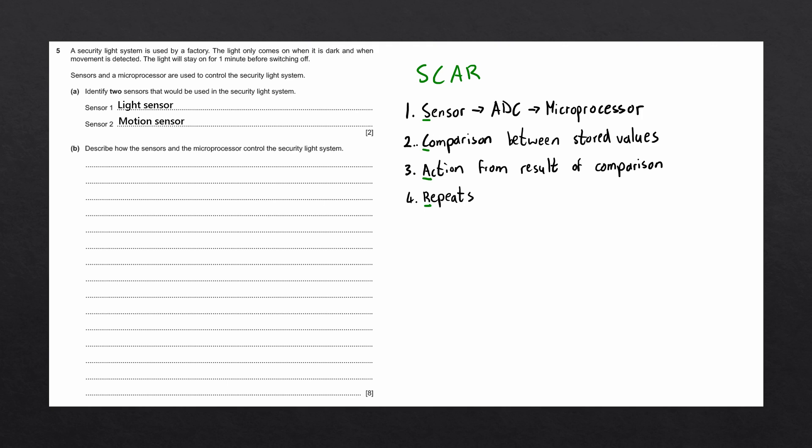The second step is how the microprocessor compares the data between stored values. The third step is to mention the action from the result of this comparison. And the last step is to mention that the entire process repeats.